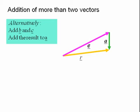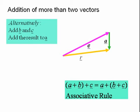In terms of vector algebra, we can write this as A plus B in brackets plus C equals A plus B plus C in brackets. This is the associative rule.